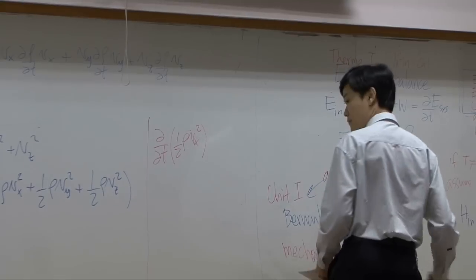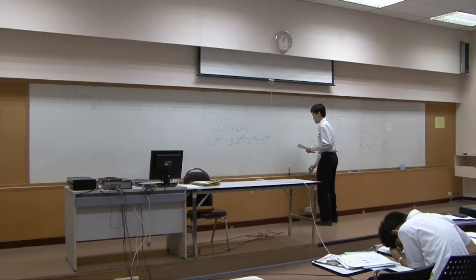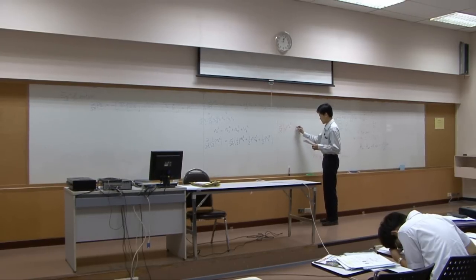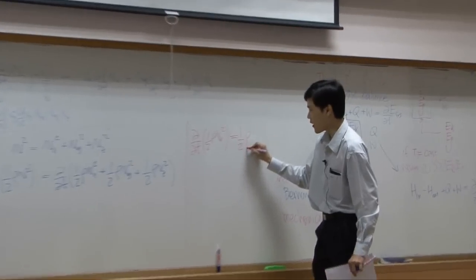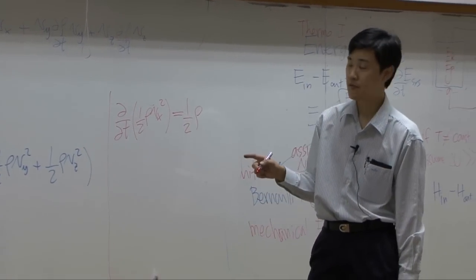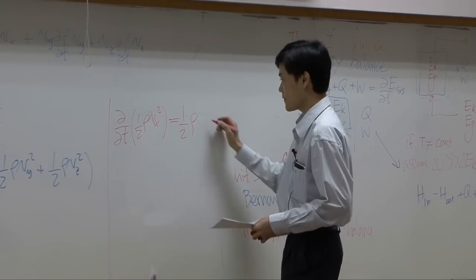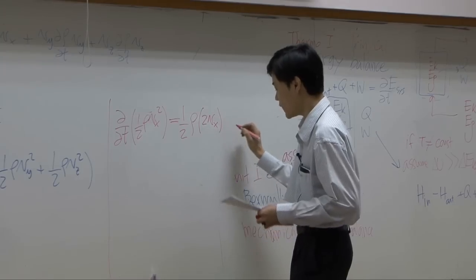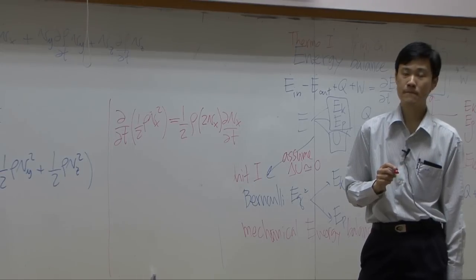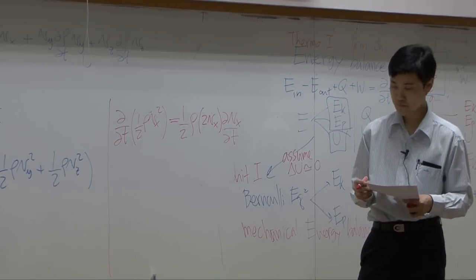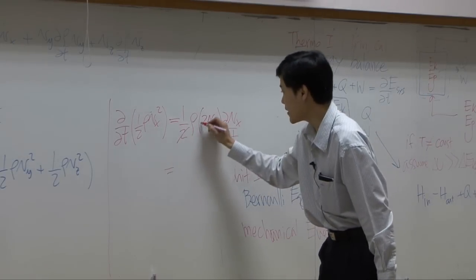Again, if you look into this term, I'll do that here. You take the differentiation. So what you have left will be differentiate of vx squared by dt. If you take differentiation you get 2 vx dvx by dt. So that 2 and 2 would go out.